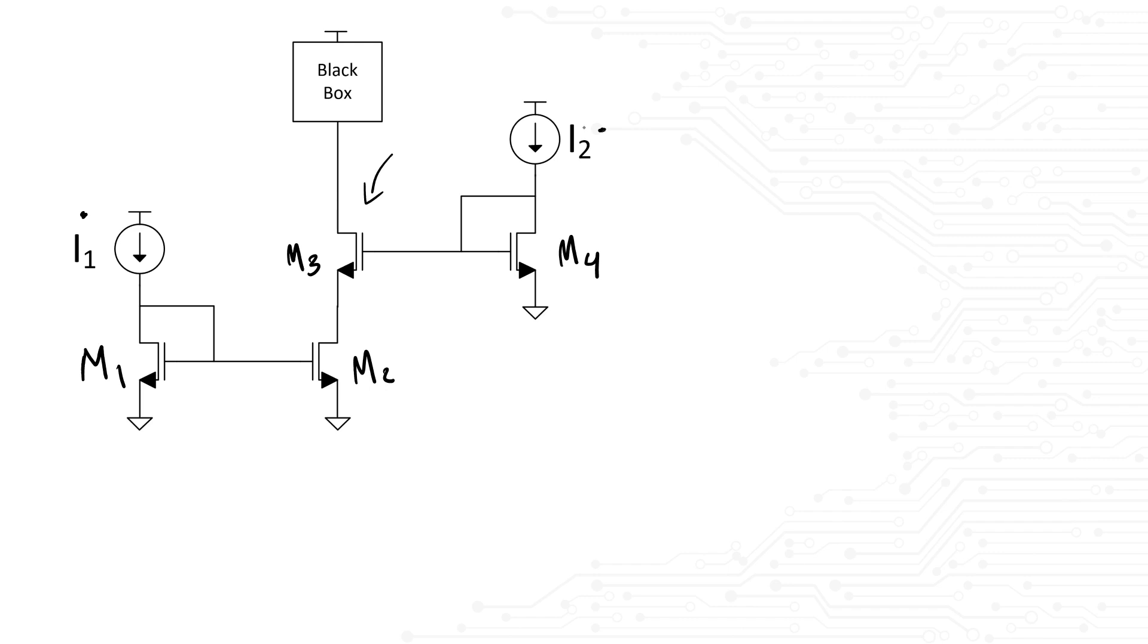But always state your assumptions out loud. You can say, well, as a first pass, let me assume that I2 is greater than I1. I2 will provide a VGS on M4. If I2 is large enough, the source of M3 will be high enough to keep M2 in saturation. If M2 is in saturation, we have a mirror between M1 and M2. So the output current at the black box is I1. The interviewer might say, all right, so what happens when I2 is less than I1?